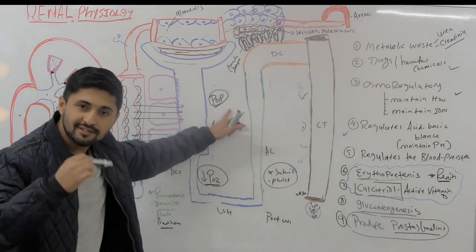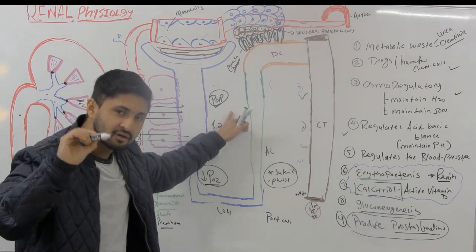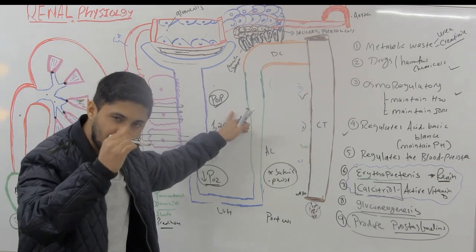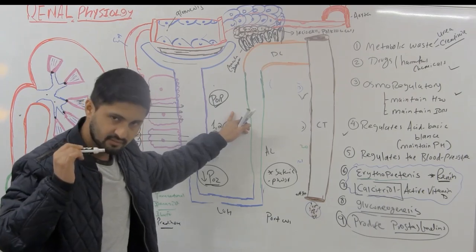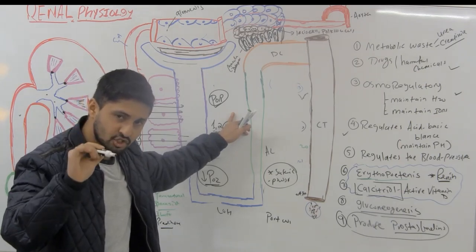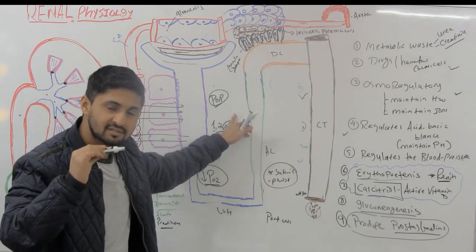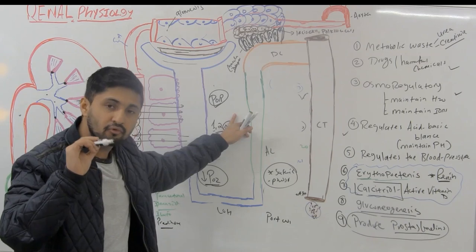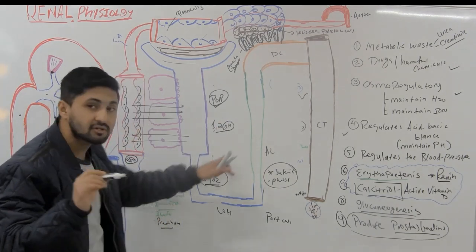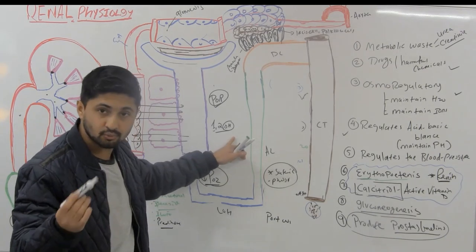In porphyria, from porphobilinogen you make hydroxymethylbilane. There's an enzyme called porphobilinogen deaminase — also called hydroxymethylbilane synthase. If you have a deficiency of that enzyme, you get acute intermittent porphyria, and you can get port wine or pink-colored urine because you're not making heme.